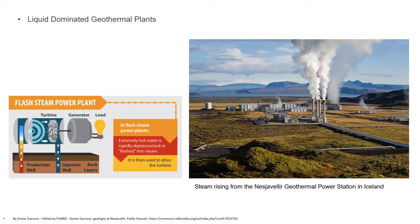Liquid-dominated reservoirs are more common than others, causing them to produce more electricity and power more stations. These reservoirs are found in specific locations including rift zones, mantle hot spots, and near new volcanoes in the Pacific Ocean. The largest liquid-dominated system in the world is found at Cerro Prieto. Here in the picture is shown steam rising from Nesjavellir geothermal power station in Iceland.